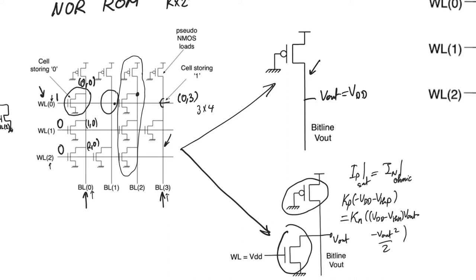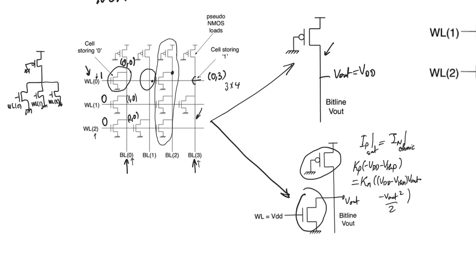Pseudo-NMOS gates are unfavorable because V_out when reading a zero is not exactly zero volts. More importantly, there is a static steady-state current flowing while reading a zero — a situation we cannot allow in memory. So the circuit must be redesigned.